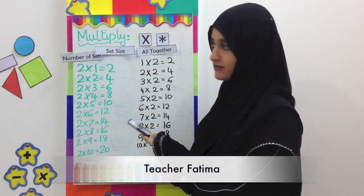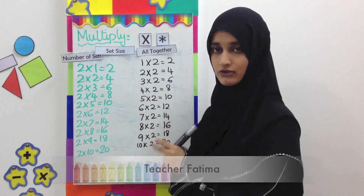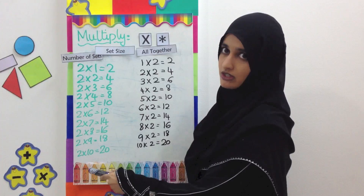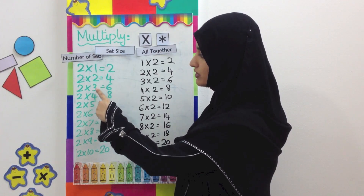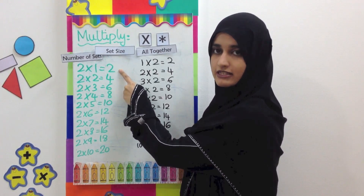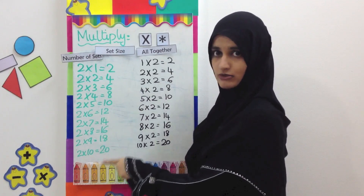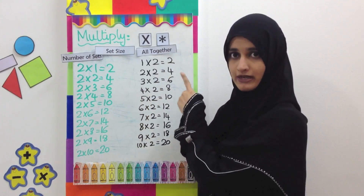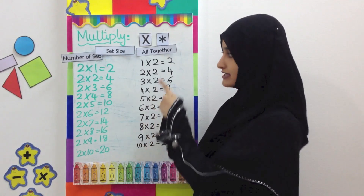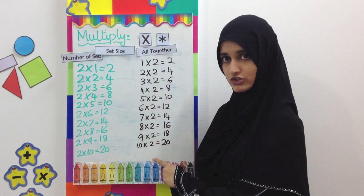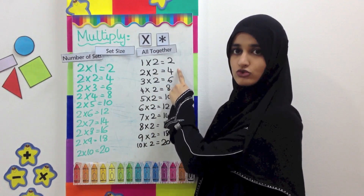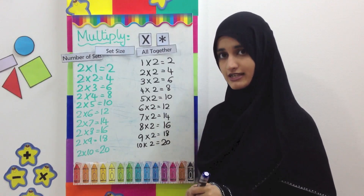Here we have the times table of two written in two different ways. In the first format, the number two is in the first position in all the questions, and the numbers one through ten follow. The answers are in twos — that means skip counting in two: two, four, six, eight, ten, twelve, fourteen. In the second format, the first place is taken by numbers from one to ten, the second number is always two, and the answer is the same skip counting in twos.